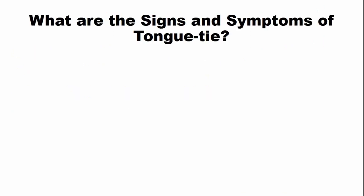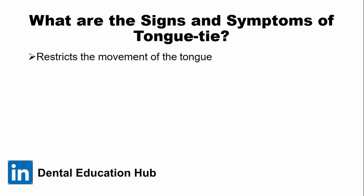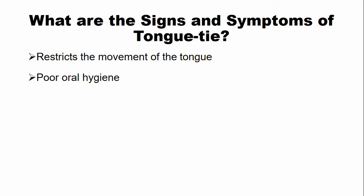So what are the signs and symptoms of tongue tie? In tongue tie, there is restriction of movement of the tongue because the tongue is attached to the floor of the mouth. There is also poor oral hygiene, because one of the functions of the tongue is to help in cleaning the oral cavity. Since movement is restricted, oral hygiene is comparatively poor in these patients.